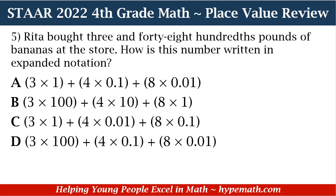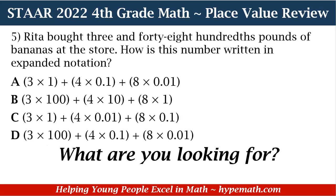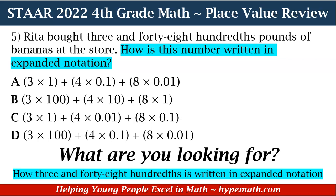This should be easy breezy because we know how to solve expanded notation word problems. We have: A — 3 times 1 plus 4 times 1 tenth plus 8 times 1 hundredth. B — 3 times 100 plus 4 times 10 plus 8 times 1 tenth. C — 3 times 1 plus 4 times 1 hundredth plus 8 times 1 tenth. D — 3 times 100 plus 4 times 1 tenth plus 8 times 1 hundredth. The first question we need to ask ourselves is: what are we looking for? We are looking for the number three and 48 hundredths written in expanded notation.